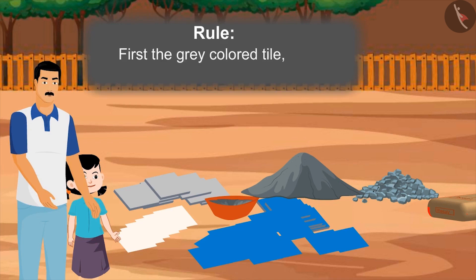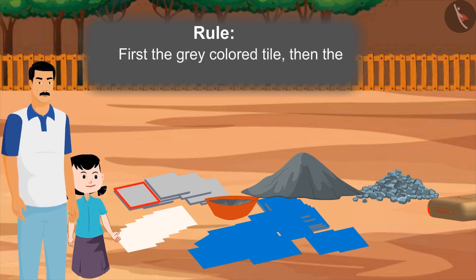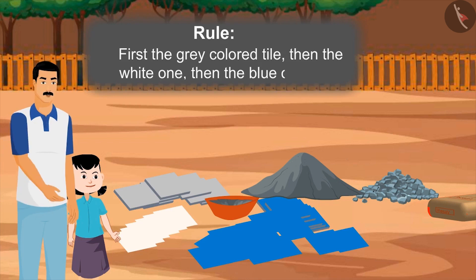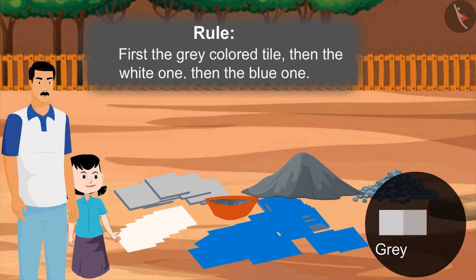First, we will put the grey-coloured tiles. After that, we will place the white one. And after that, the blue one. And make sure to put the tiles in this order only, so that all of them make a beautiful pattern.